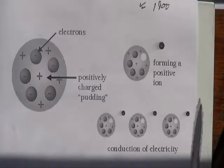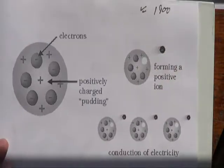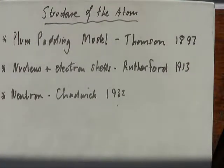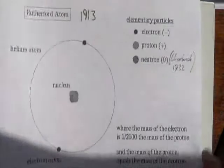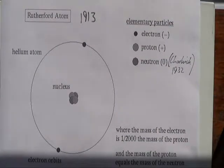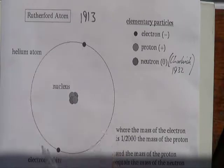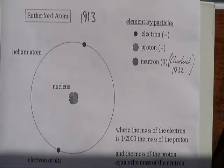That was the Plum Pudding Model, put forward in about 1897, roughly 1900, by J.J. Thomson. That was further developed through a series of experiments by Rutherford, who put together the idea that we would have electrons in shells — so we moved on from that Plum Pudding random mixture to having electrons in shells with a nucleus. Rutherford put forward that model in about 1913.